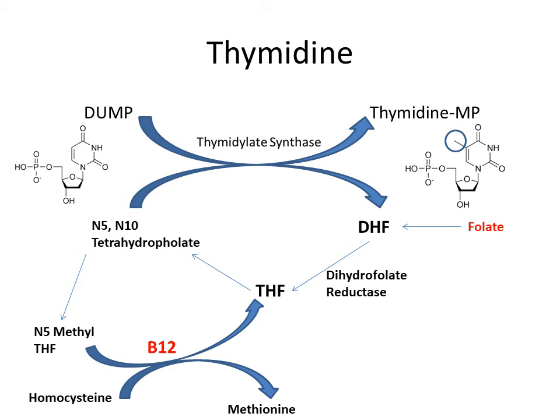To summarize: thymidine is synthesized from uridine with the help of thymidylate synthase. In this process, N5,N10-tetrahydrofolate converts into dihydrofolate and back, requiring folate. N5,N10-tetrahydrofolate also converts into N5-methyl-tetrahydrofolate, which converts back into tetrahydrofolate — a process requiring vitamin B12 — and similarly, homocysteine converts into methionine, also requiring vitamin B12. Deficiency of vitamin B12 leads to high N5-methyl-tetrahydrofolate, low tetrahydrofolate, inability to make thymidine, and high homocysteine levels.